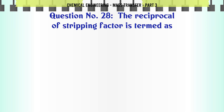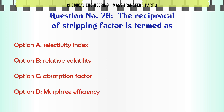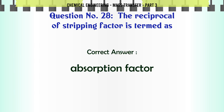The reciprocal of the stripping factor is termed as: A) selectivity index, B) relative volatility, C) absorption factor, D) Murphree efficiency. The correct answer is: absorption factor.